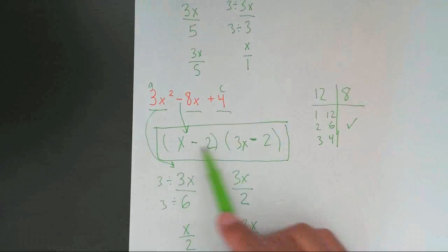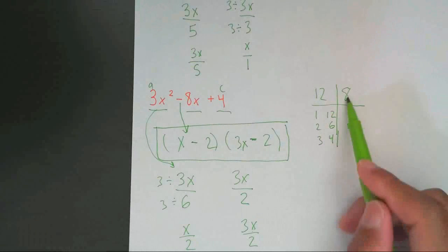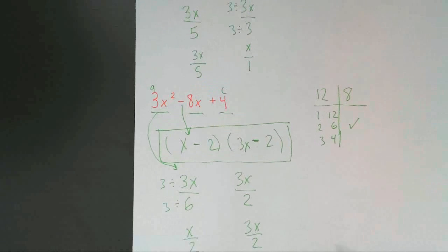So when your signs are the same, remember you're adding up your factors to give you the middle number 8. Now we're going to do one last one.